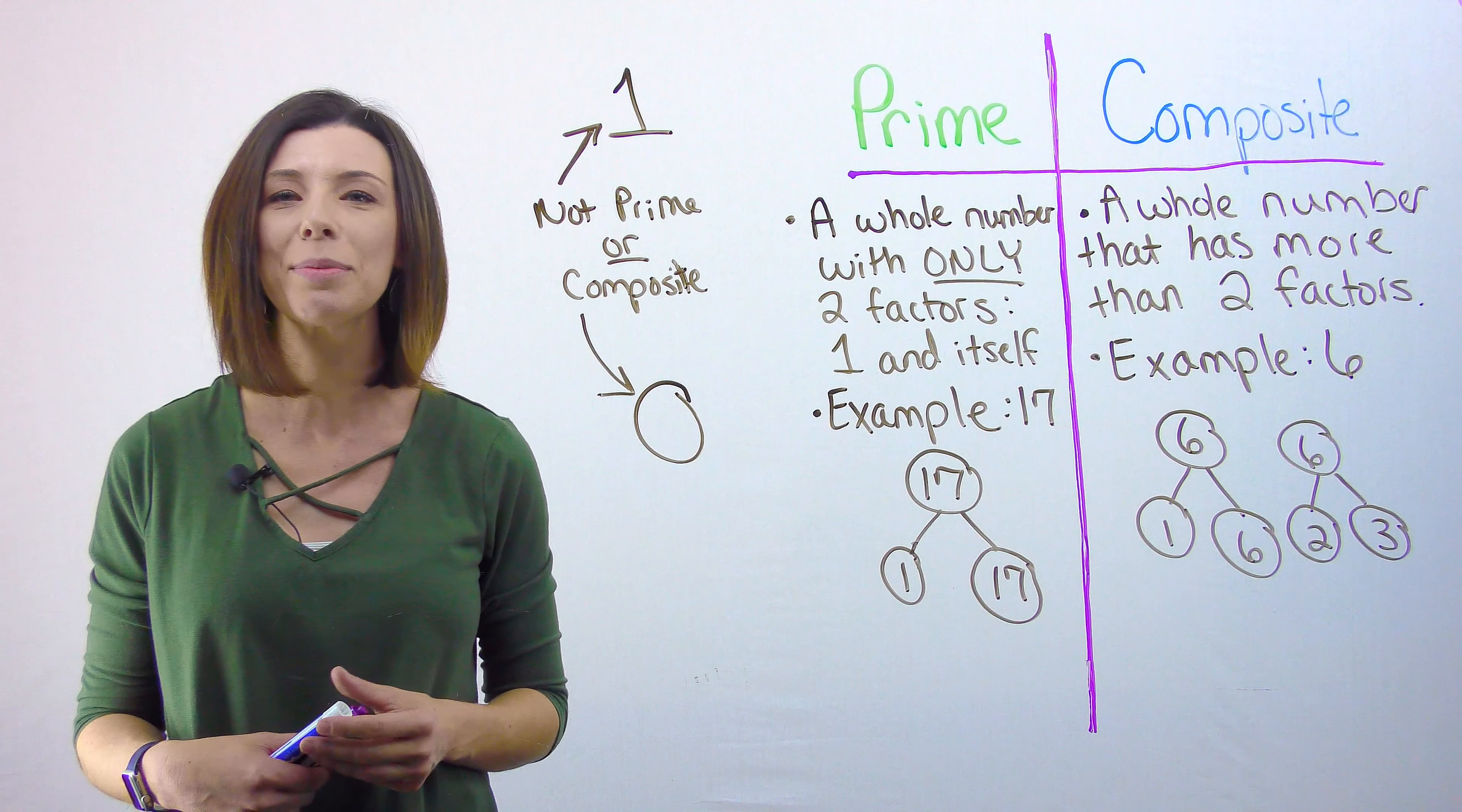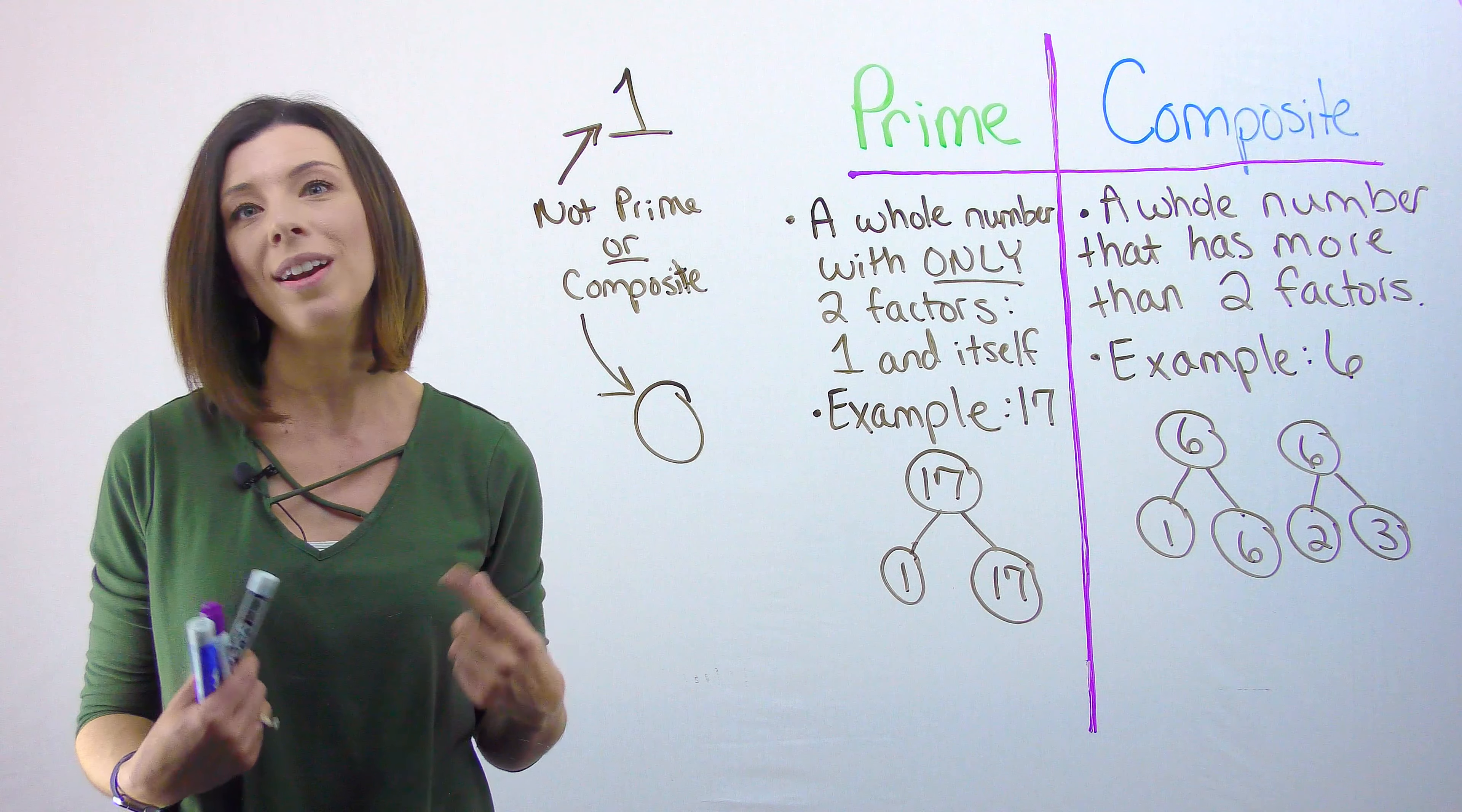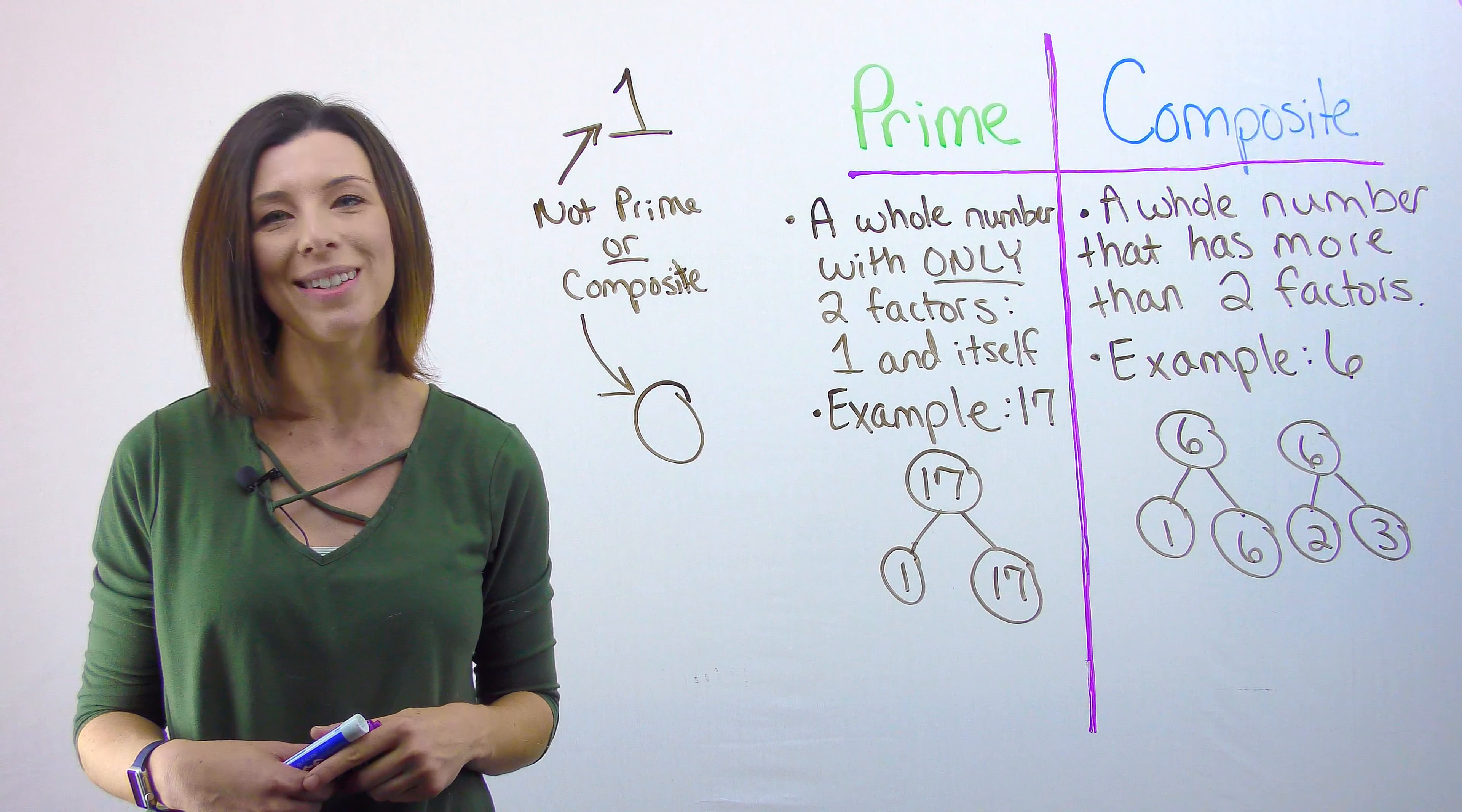I hope this video has cleared up some confusion between prime and composite numbers, and now you know that one and zero are neither prime nor composite.